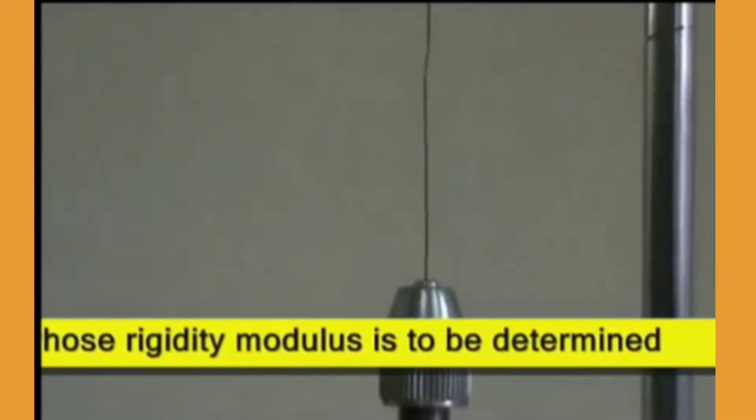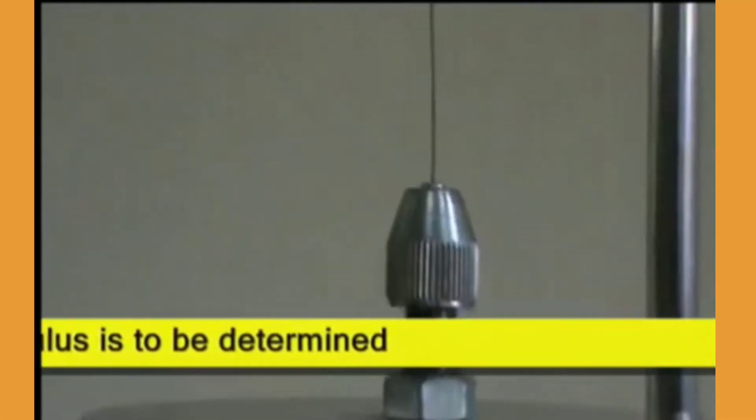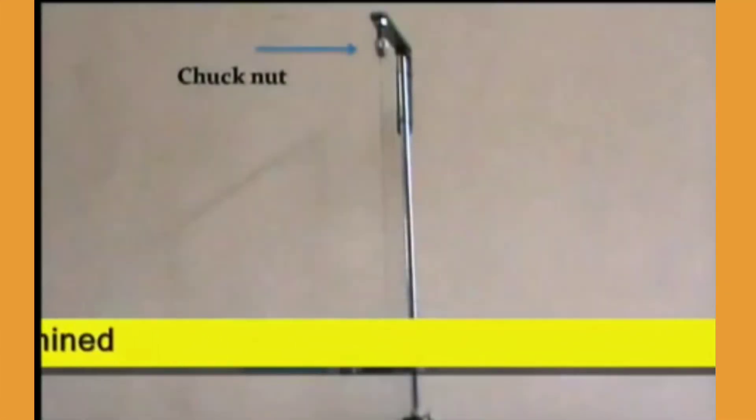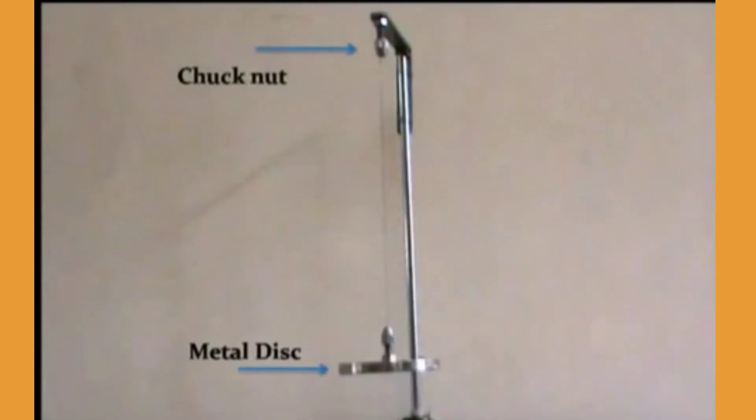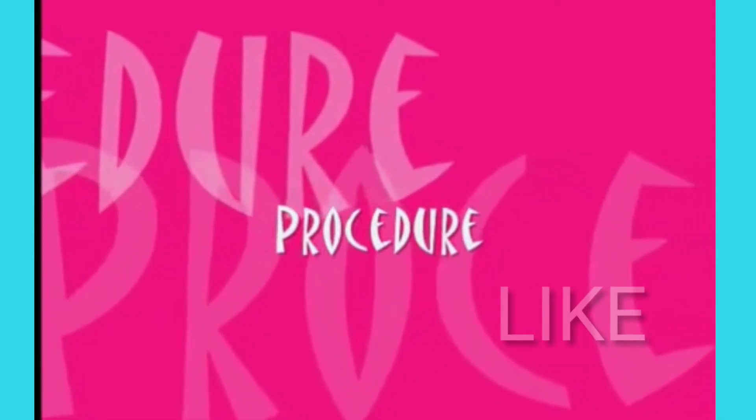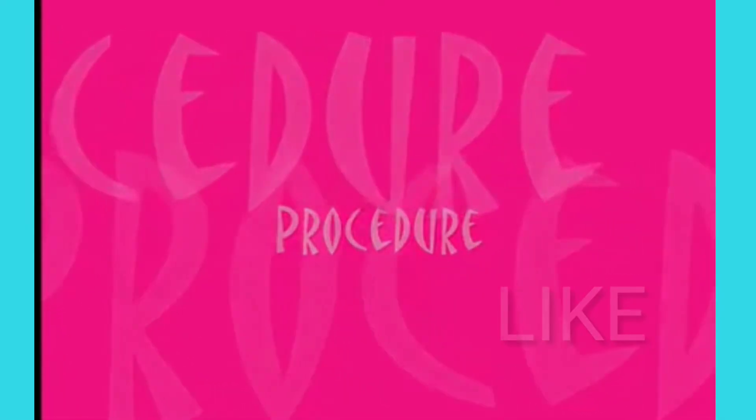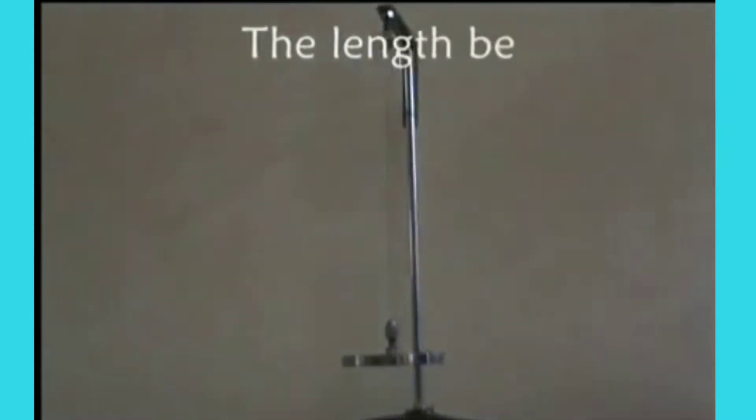Required apparatus: check nuts, metal disc, vernier calipers, screw gauge, meter scale, and scissors.